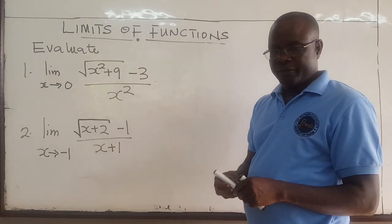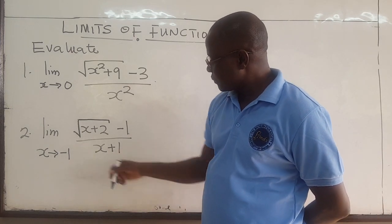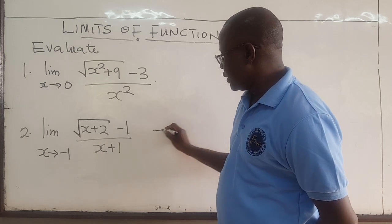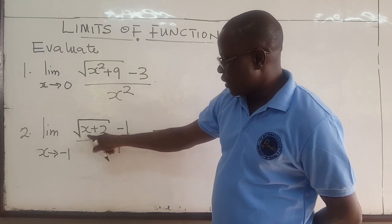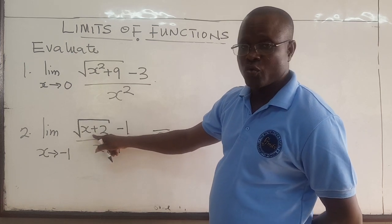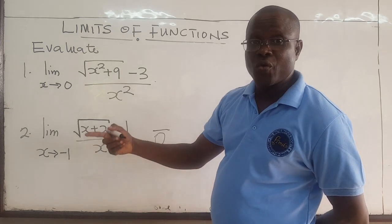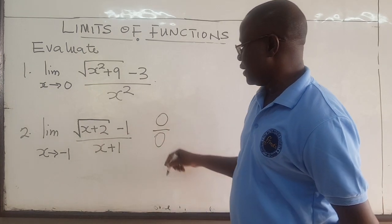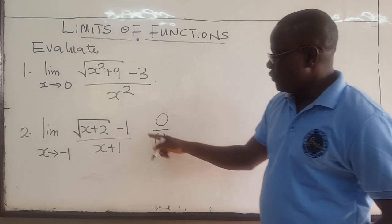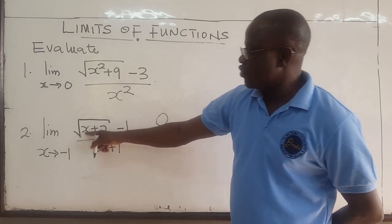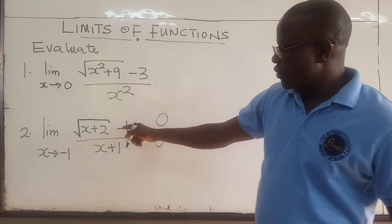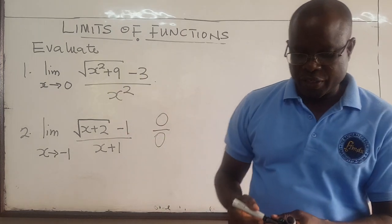Notice here that x is approaching negative 1. Straight away you see the denominator will go to 0. Up here, when x is negative 1, negative 1 plus 2 is 1, the square root of 1 is 1, and 1 minus 1 is 0. So again you are getting the indeterminate form 0 over 0. Because of the square roots, the easiest approach is to rationalize it.